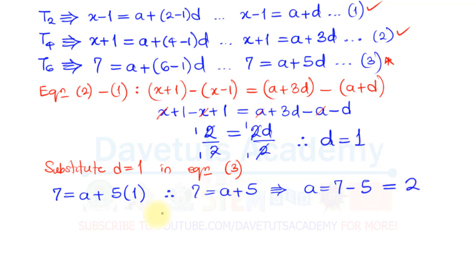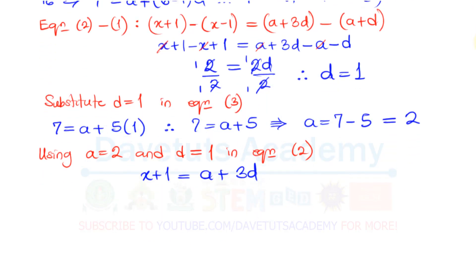So I have d is 1, I have a is 2. Then looking at either equation 1 or equation 2, any one of the two, I can now substitute for a and d. Using a = 2 and d = 1 in equation 2, I'm now going to have, in equation 2, what I had initially was x+1 = a + 3d.